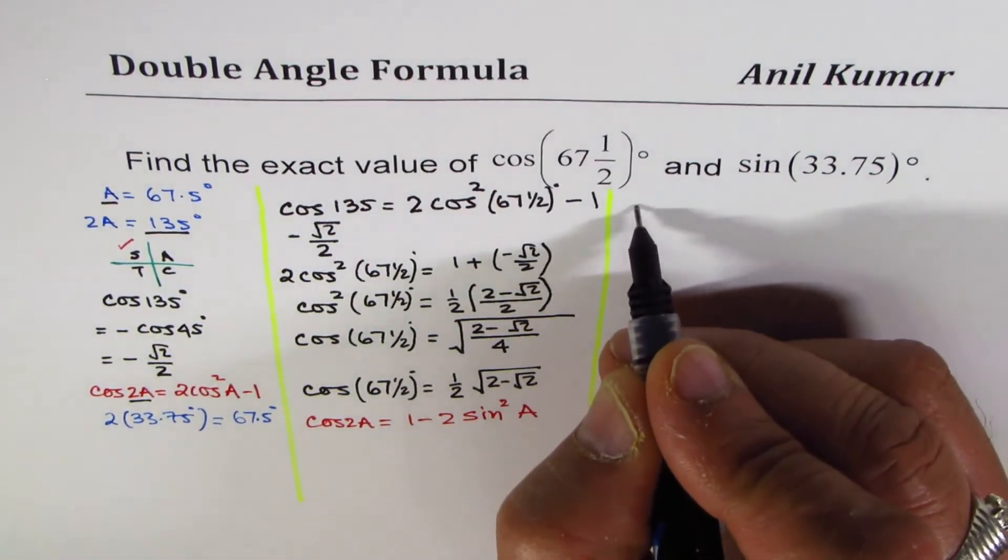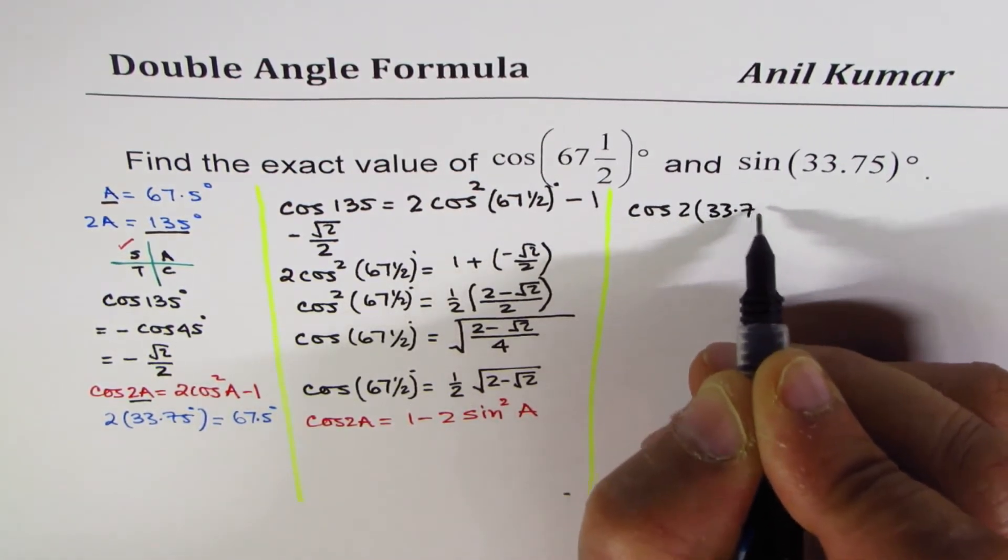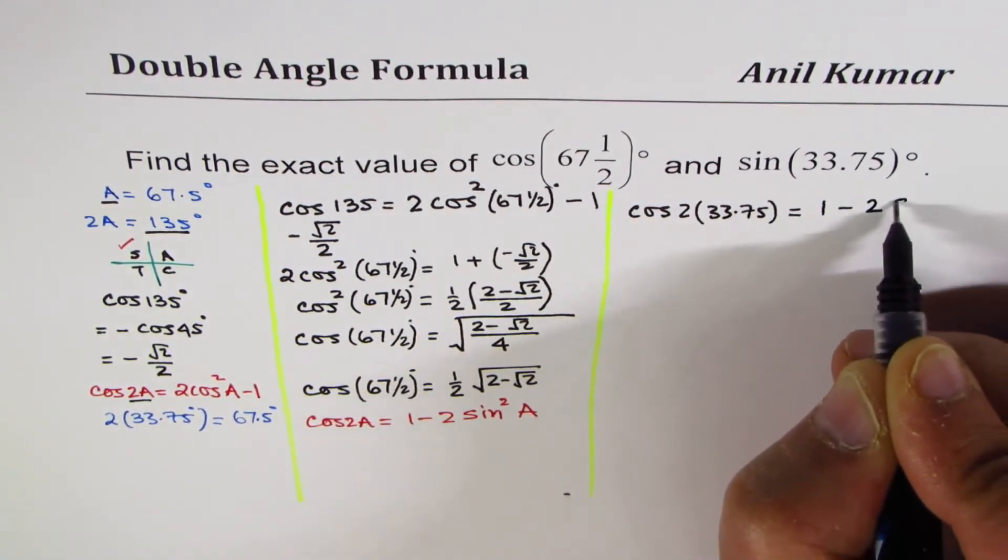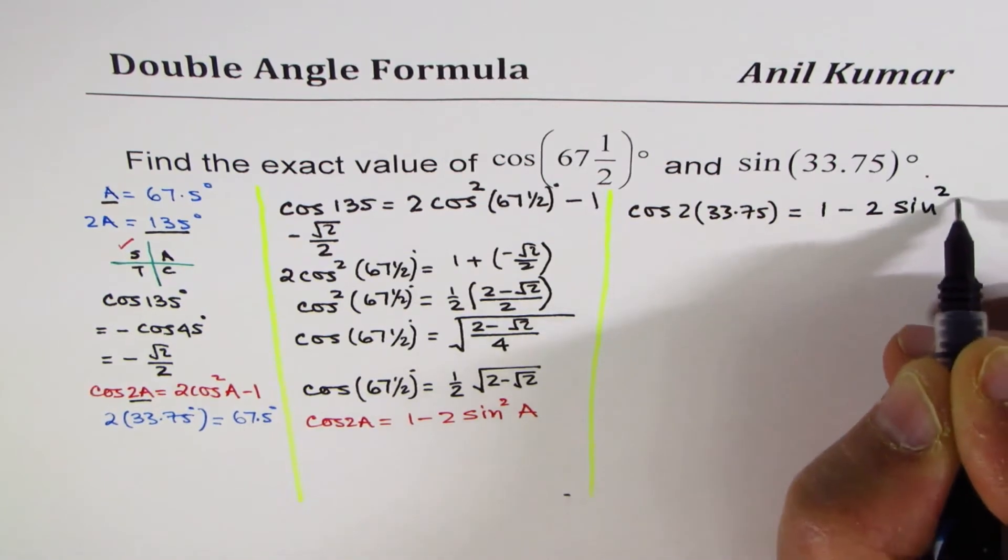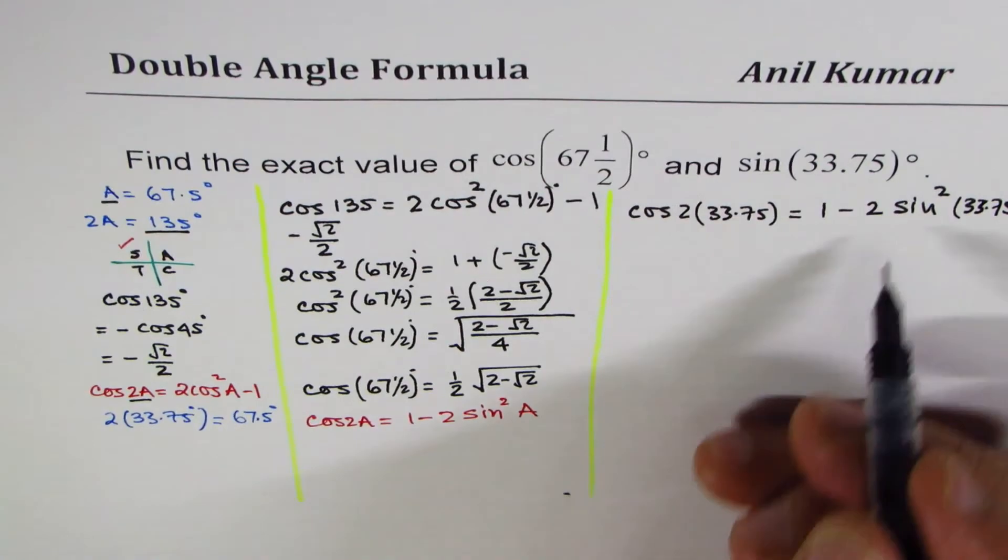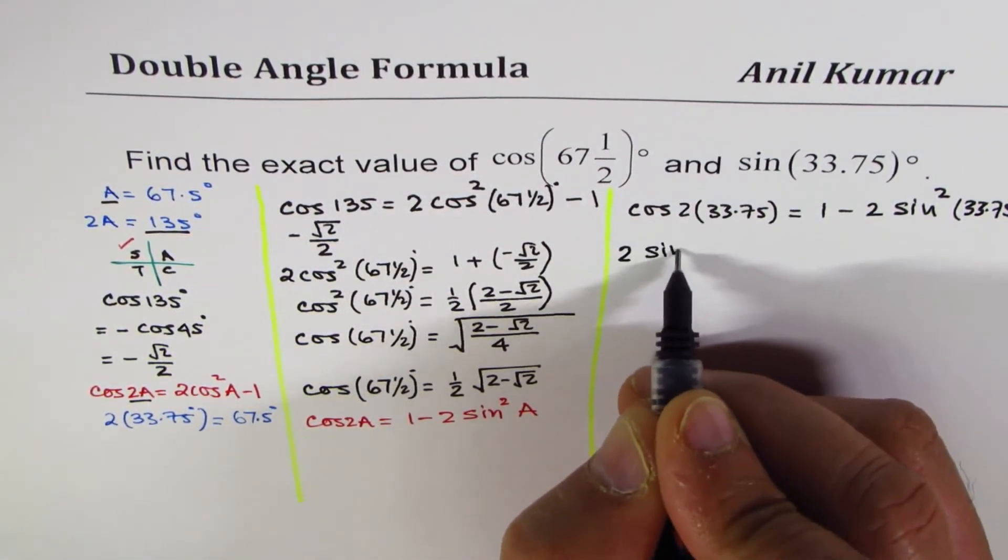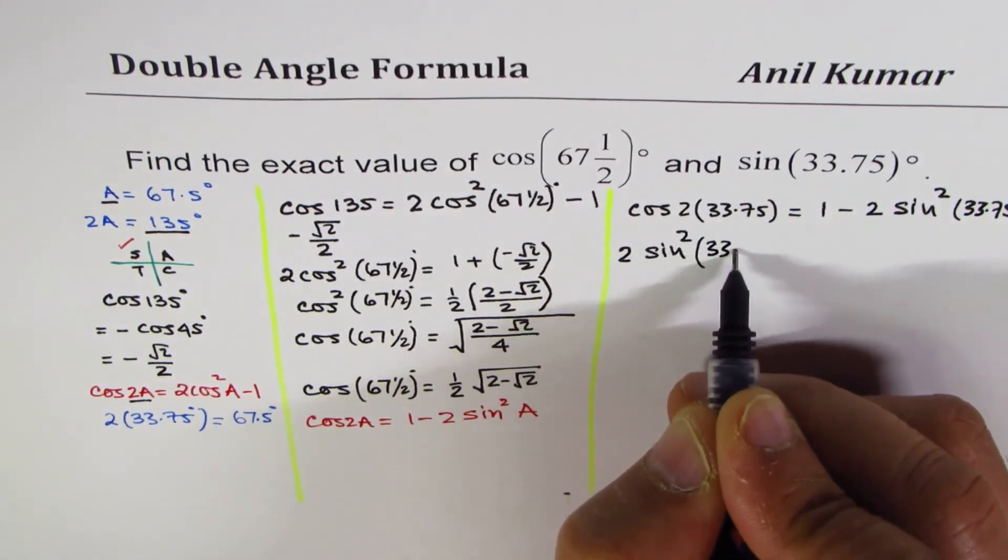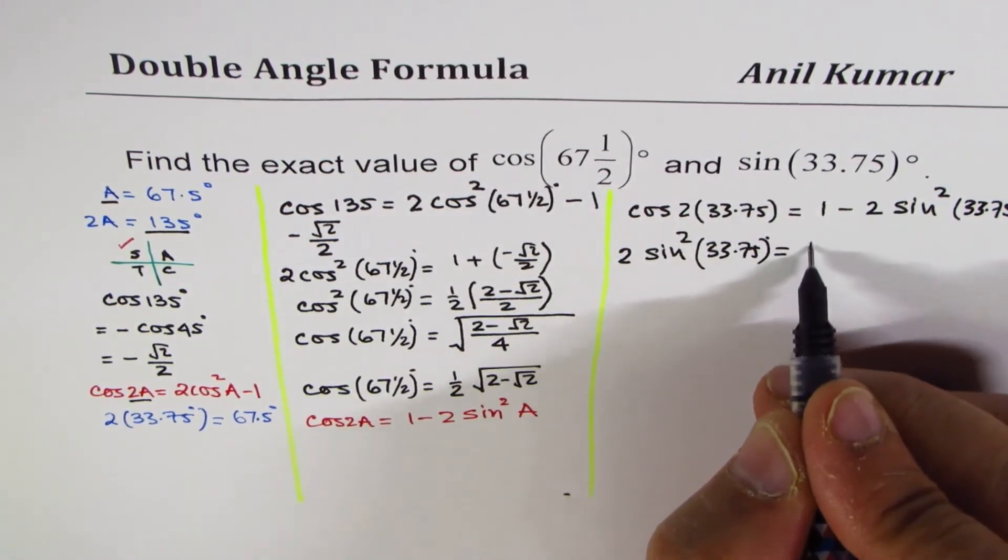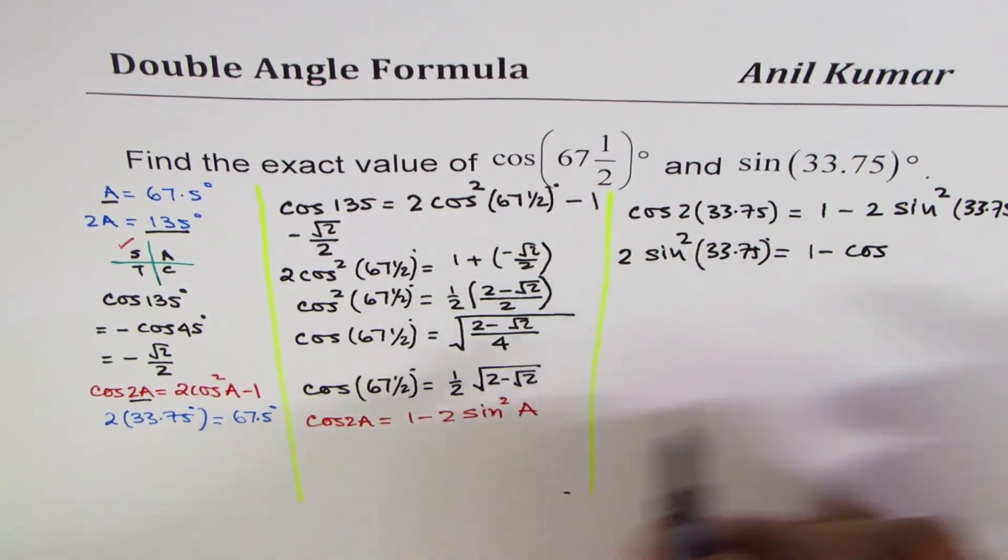So we can now write this as cos of twice 33.75 is equal to 1 minus 2 sine square 33.75 degrees. Now let's reorganize it. So we get 2 sine square 33.75 degrees equal to 1 minus cos, twice this is 67.5.